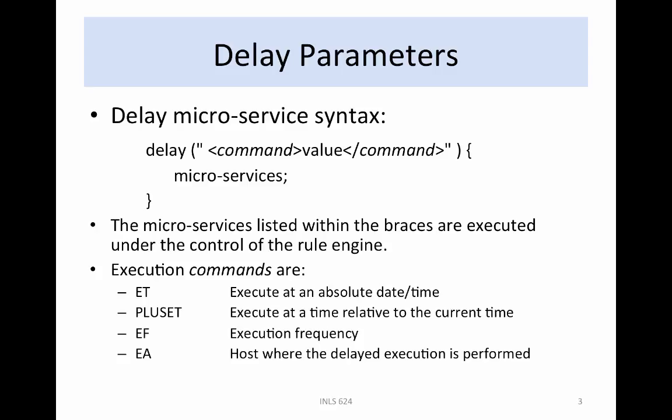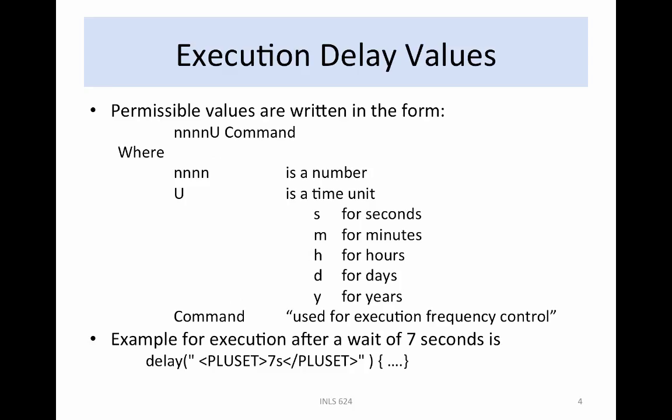The value associated with the control command depends upon which control is being used. The allowed values for the delay microservice are written in the form nnnnU Command, where nnnn is a number, U is a time unit (s for seconds, m for minutes, h for hours, d for days, y for years), and command is used to control the execution frequency.